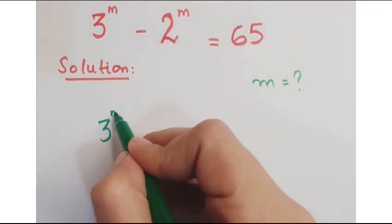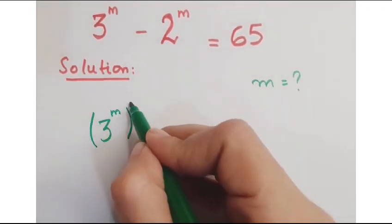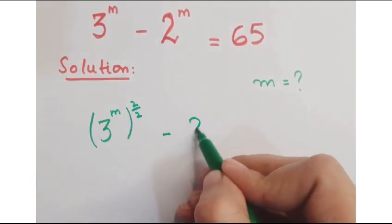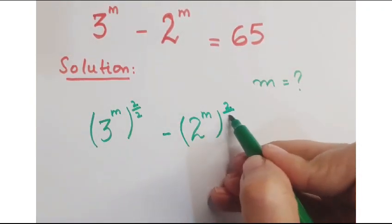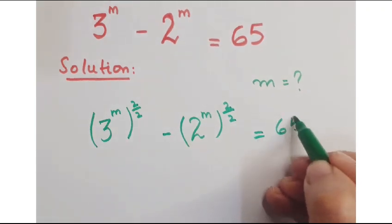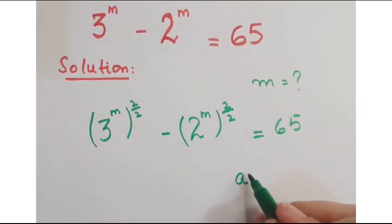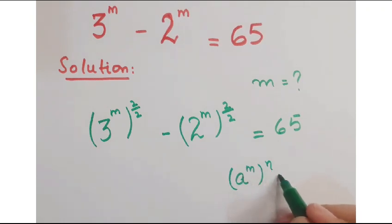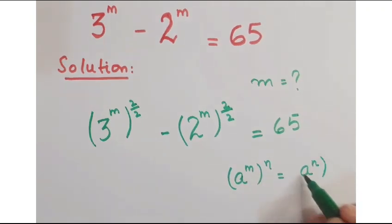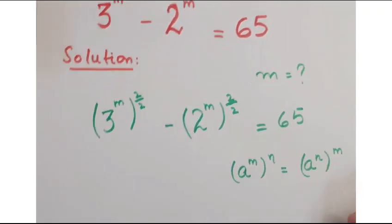Let's see how do we proceed in this question. First of all, just multiply and divide the exponent by 2 in both the numbers. Now, as you know that a to the power m whole to the power n can be written as a to the power n whole to the power m.